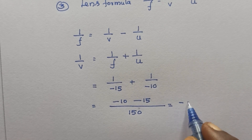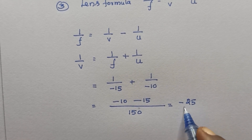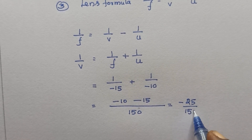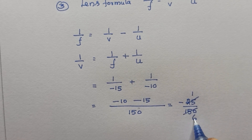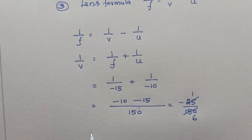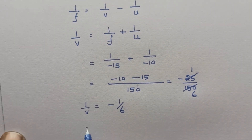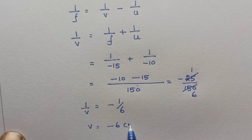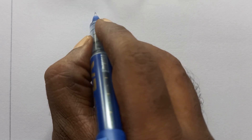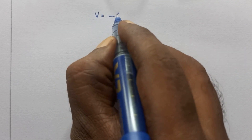This is equal to minus 25 divided by 150, and cancelling we get 25 goes into 150 six times. So 1 by v equals minus 1 by 6. Taking reciprocal, we get v equals minus 6 centimeters.